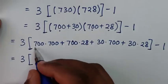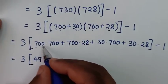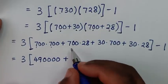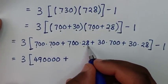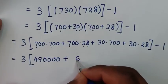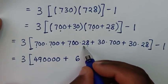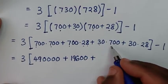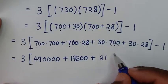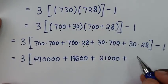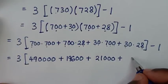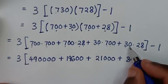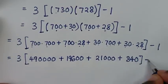Here: 700 times 700 — 7 times 7 is 49, then four zeros — so 490,000. Plus 7 times 28: 7 times 8 is 56, carry 5; 7 times 2 is 14 plus 5 is 19 — giving 196, then two zeros, so 19,600. Plus 30 times 700: 3 times 7 is 21, then three zeros, so 21,000. Plus 30 times 28: 3 times 8 is 24, carry 2; 3 times 2 is 6 plus 2 is 8 — giving 840. Then bracket minus 1.